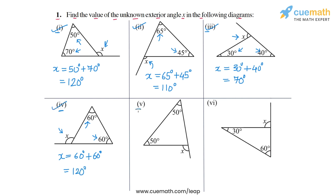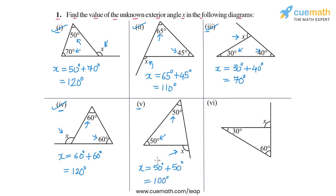In part five, x is again this exterior angle and the opposite interior angles are 50 degrees and 50 degrees. So x will be equal to 50 degrees plus 50 degrees, and this will be equal to 100 degrees. So this is the answer for part five.